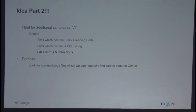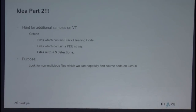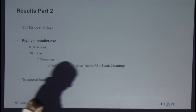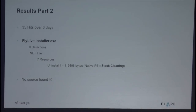Part two: I added an additional constraint — the same criteria as before, but now I want files with less than five detections. I want non-malicious files. Now, instead of results in five minutes, over six days I had 35 hits. I looked at each of those 35 hits, looked at all their PDB strings, went on GitHub, searched Google, everywhere. I wasn't able to find source code for any of those projects.